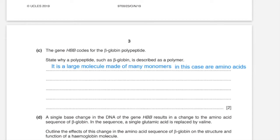B: a single base change in the DNA of gene HBB results in a change to the amino acid sequence of beta globin — a single glutamic acid is replaced by valine. Outline the effects of this change on the structure and function of hemoglobin. The base change means that the triplet used to transcribe mRNA changes. As a result, during transcription, a new mRNA codon forms that in turn forms hydrogen bonds with a different tRNA molecule, and that tRNA molecule would be carrying valine instead of glutamic acid, so glutamic acid is replaced by valine.